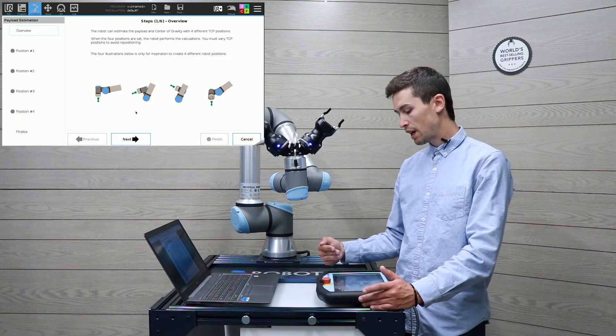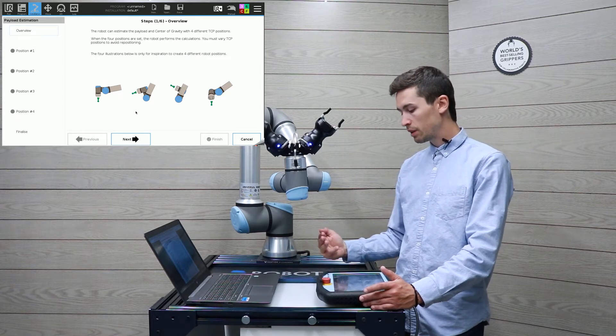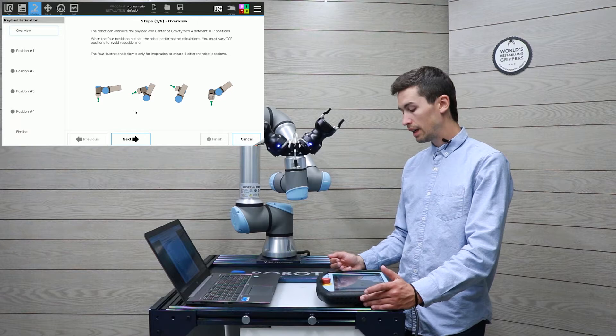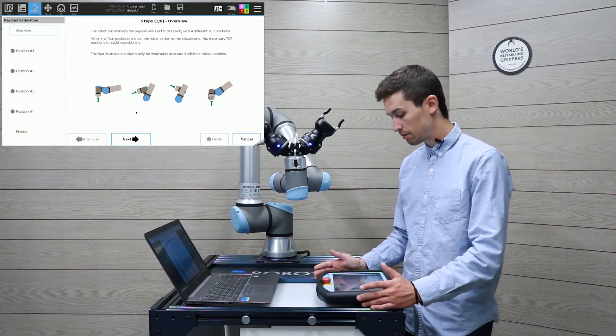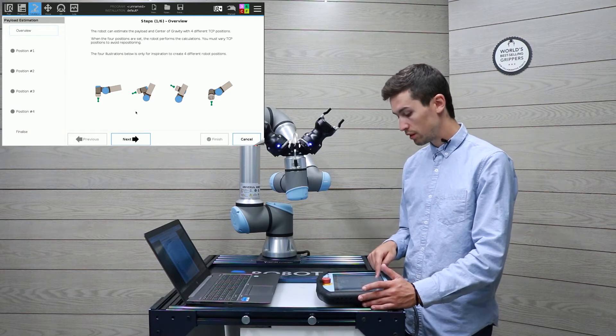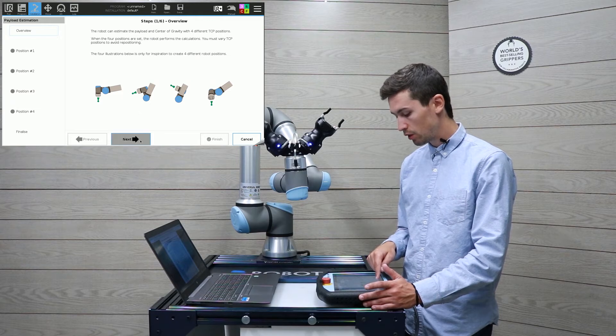Basically what we have to do is to set four different positions in order to set the weight of the payload of the grippers.